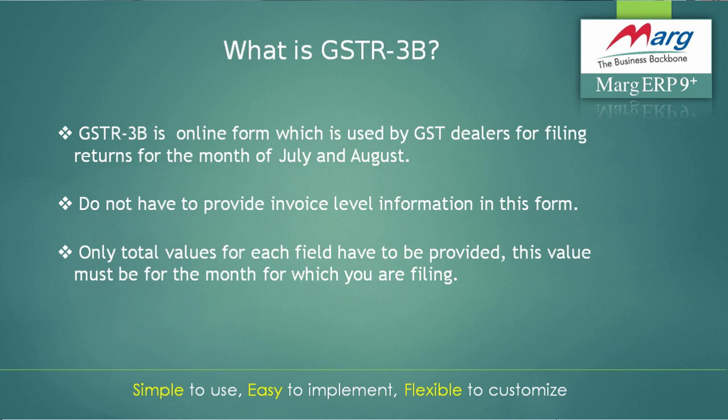GSTR 3B is a provisional tax return which is to be filed for the months of July and August only. Regular dealers are liable to file GSTR 3B; dealers under the composition scheme, ISD, or UIN holders are not liable to file GSTR 3B. In form GSTR 3B, you just have to provide the consolidated values of outward and inward supplies of the month — you do not have to provide invoice-level information.